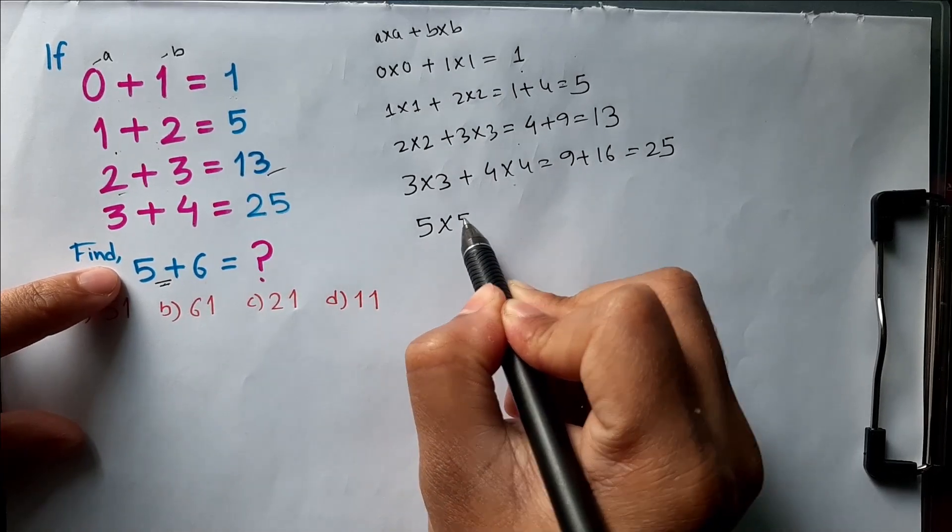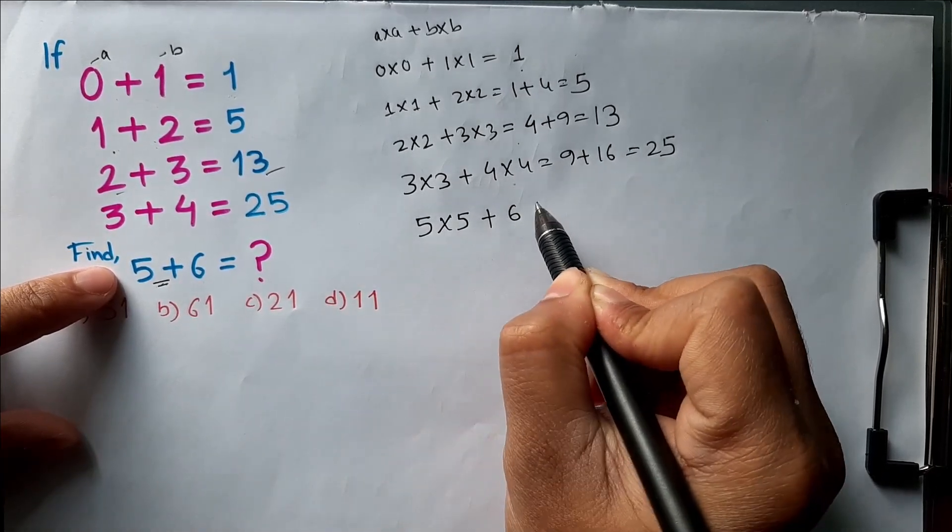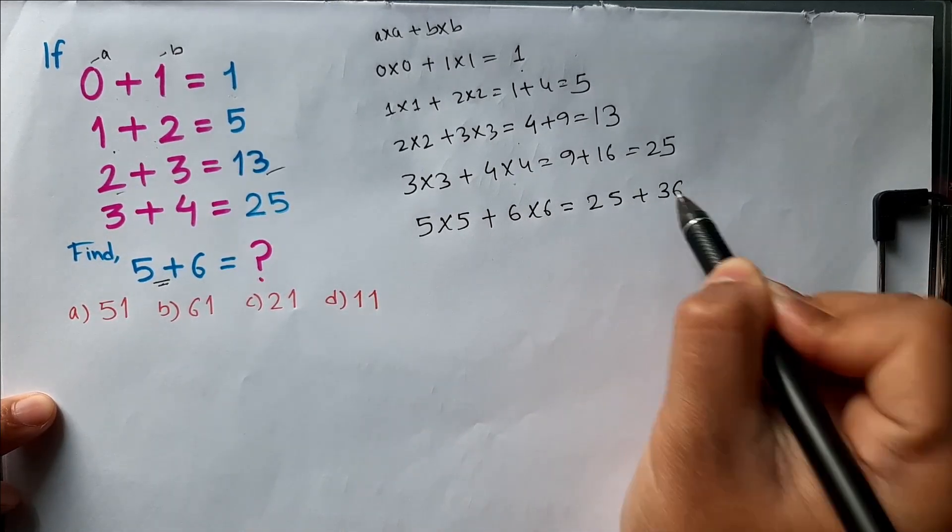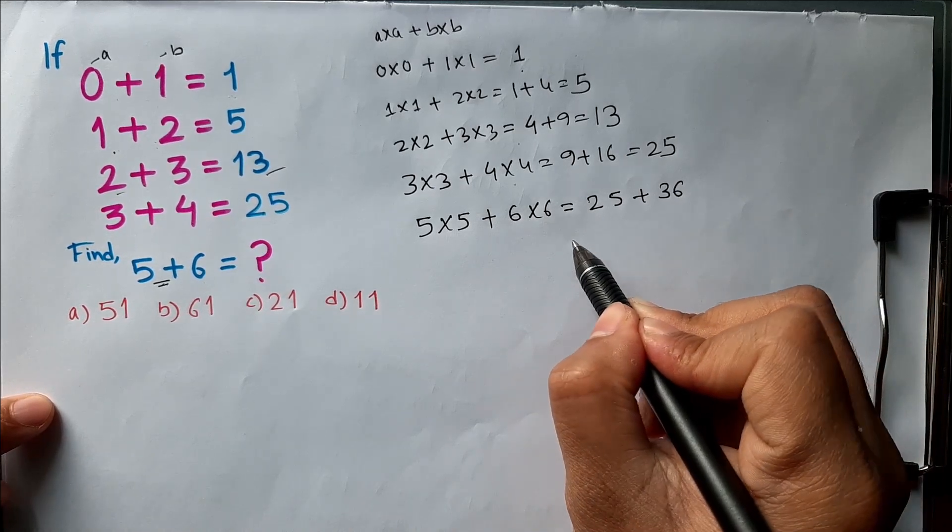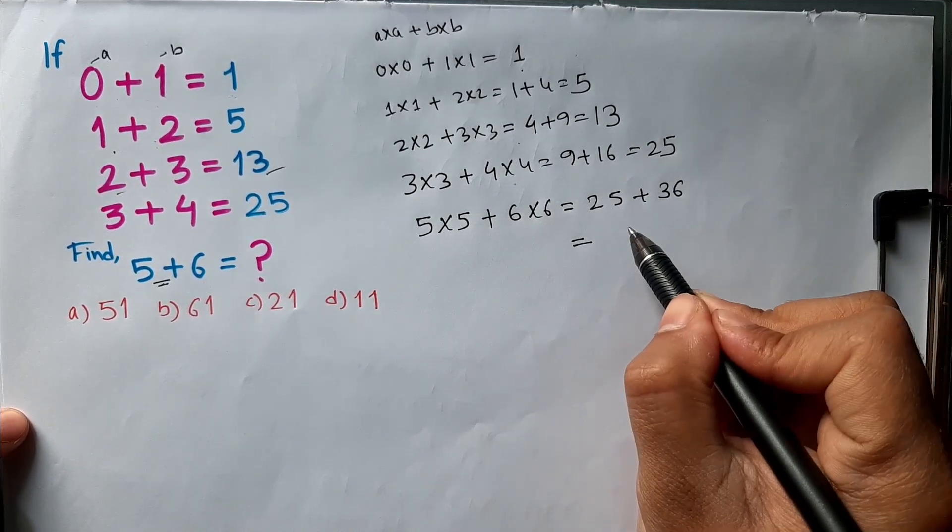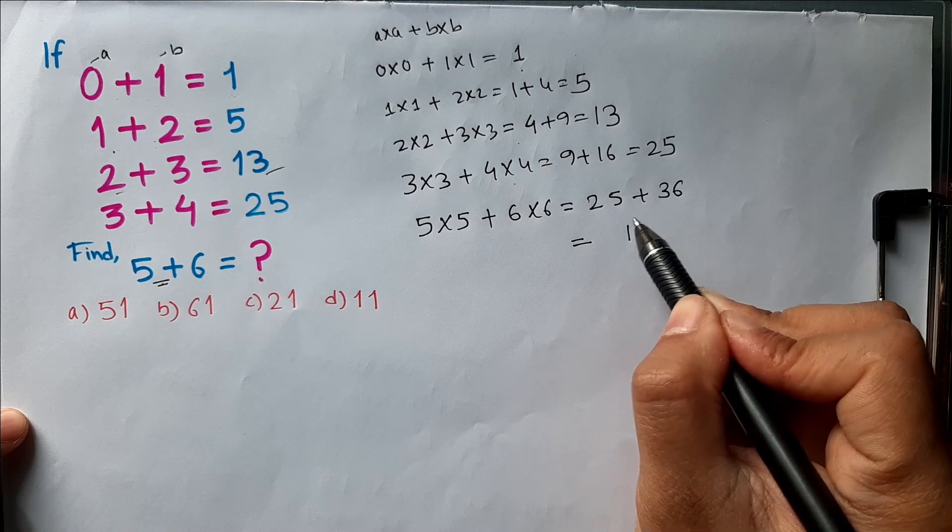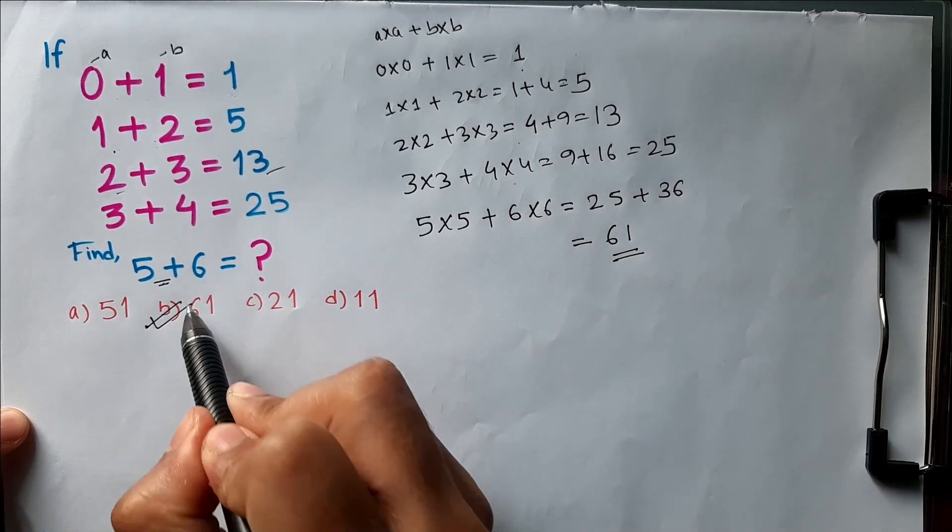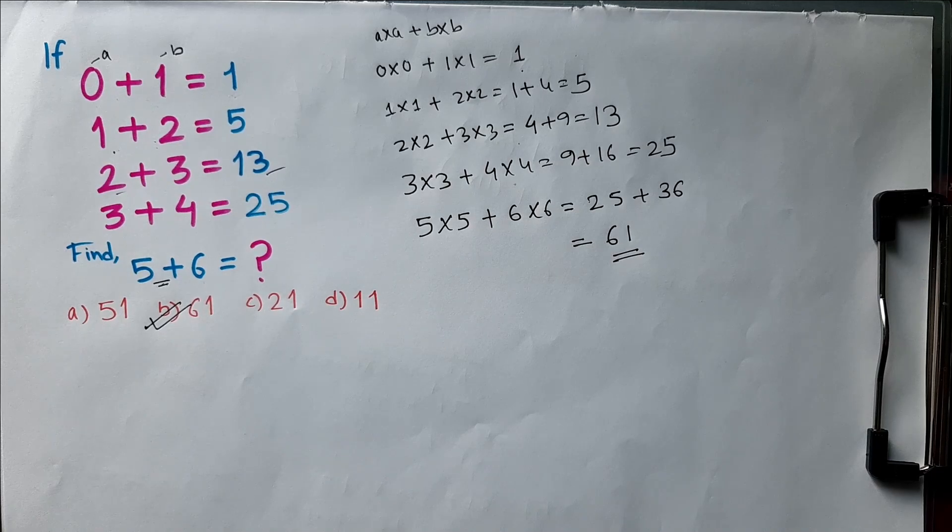5 × 5 + 6 × 6, we'll get 25 + 36. So how much we'll get? 11, 3, 4, 5, 61. So the answer is B: 61. Thanks for watching guys, do like and subscribe.